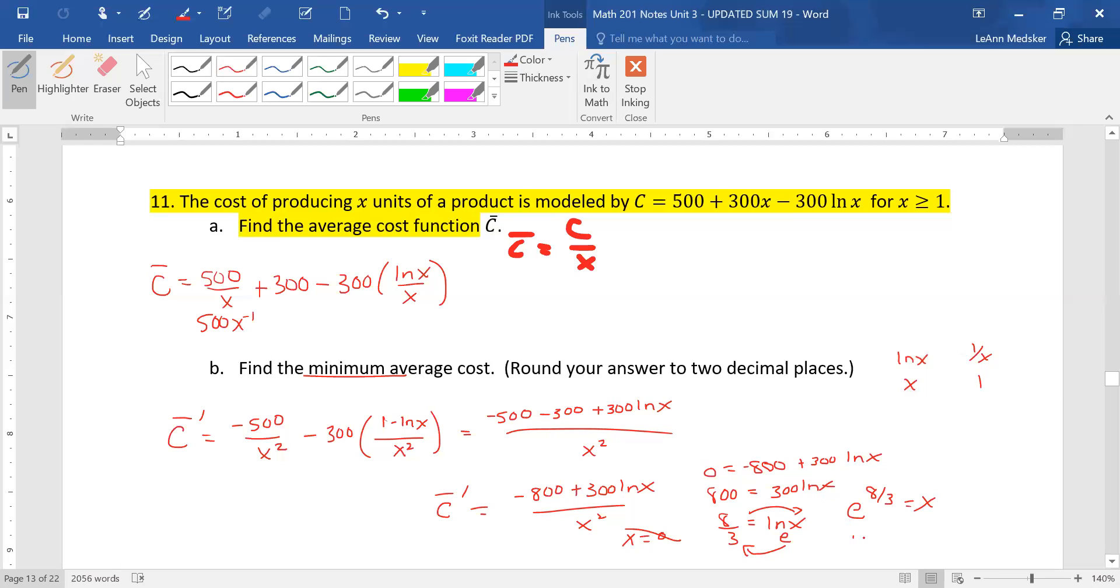Now that is number of units. So about 14 units or 14.39. So the actual minimum, so this is the units, remember.